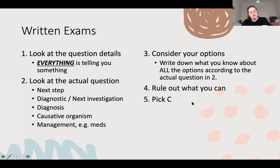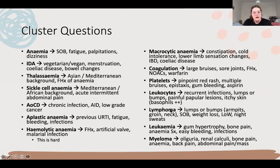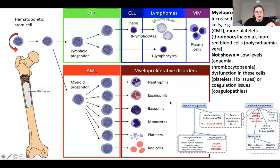If in doubt, pick C. The cluster questions are a little bit difficult, and ultimately if you got an anemia station it would be iron deficiency anemia or your macrocytic - primarily B12 and folate - but otherwise there are other things you should ask about as well.